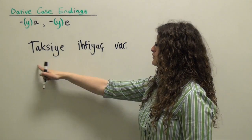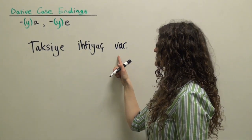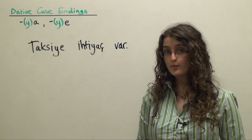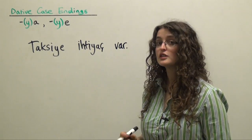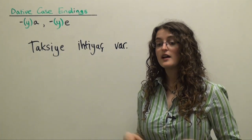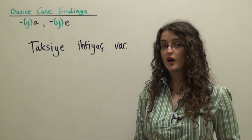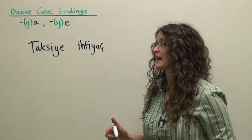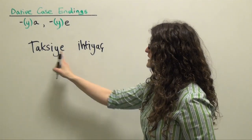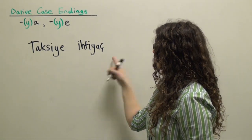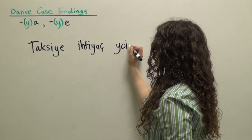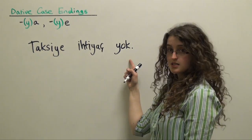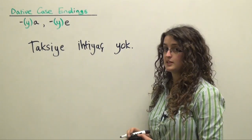Literally, 'the need for a taxi exists,' or 'there is a need for a taxi.' We can do the exact same thing with the opposite of 'var' — the Turkish word 'yok,' meaning 'there isn't,' 'there aren't,' or 'does not exist.' So if we want to say 'there's no need for a taxi,' we can say: 'Taksiye ihtiyaç yok' — literally, 'the need for a taxi does not exist.'